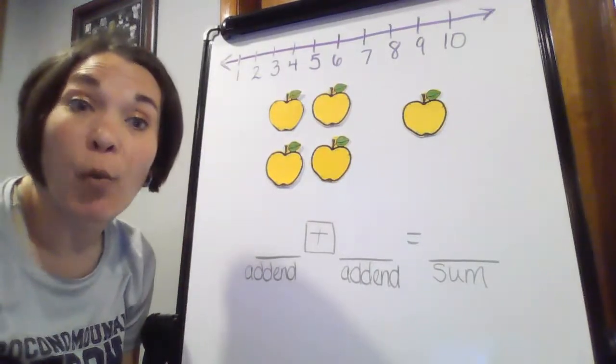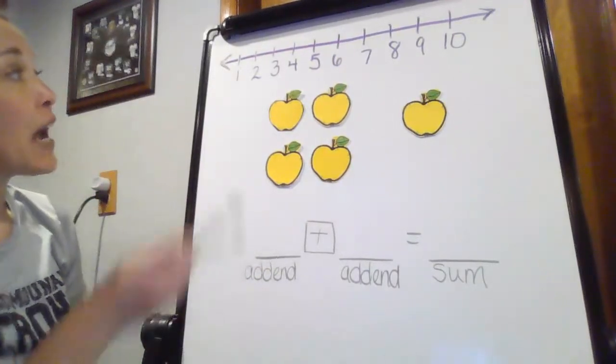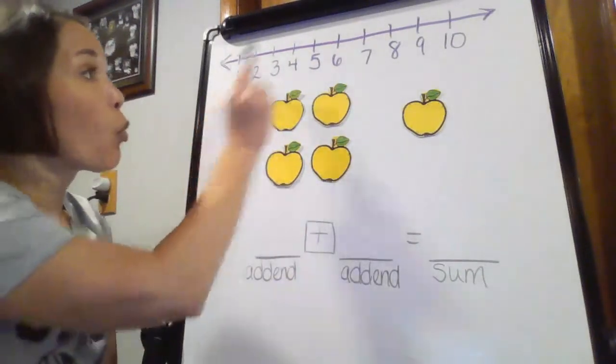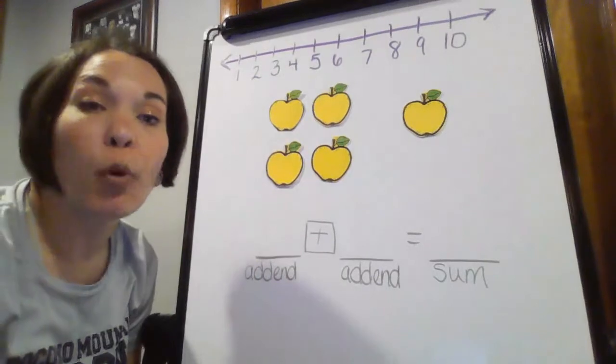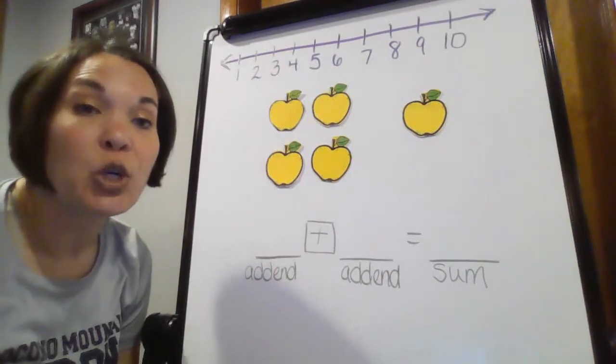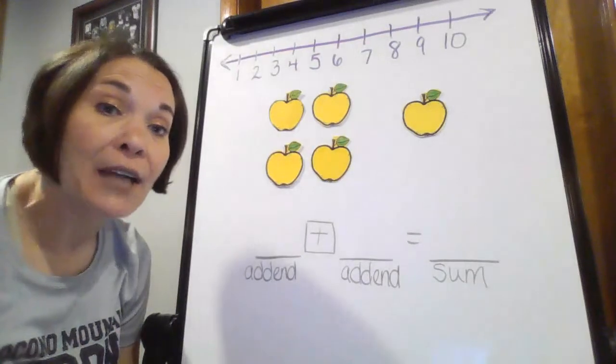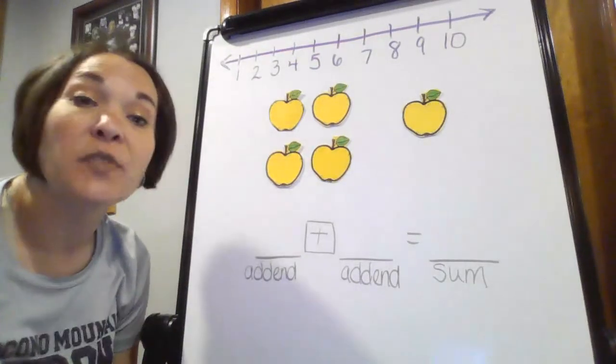So let's talk about what I have on my whiteboard first. First thing, I have a number line, and on my number line I have the numbers from 1 through 10. Number lines are incredibly important in math because it's a very good tool. It helps us add, it helps us subtract, it helps us count on, it helps us count back.